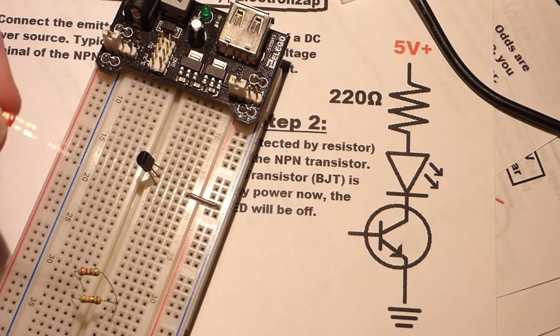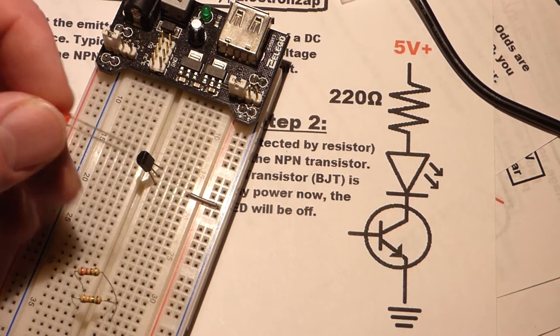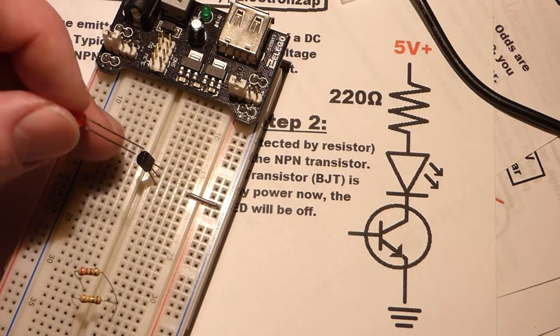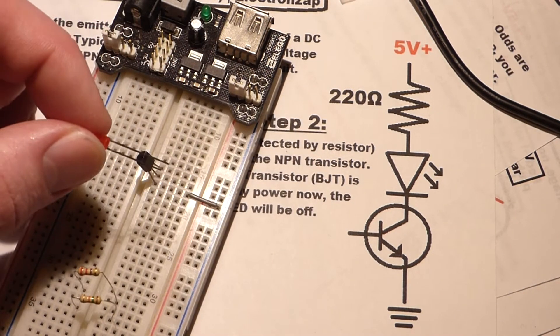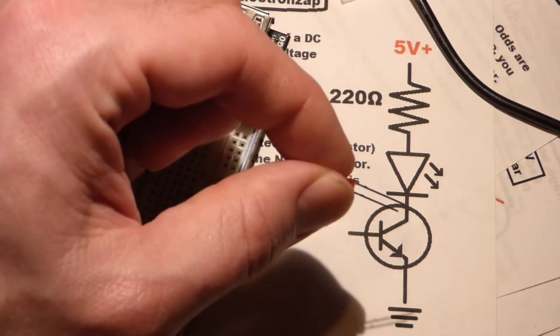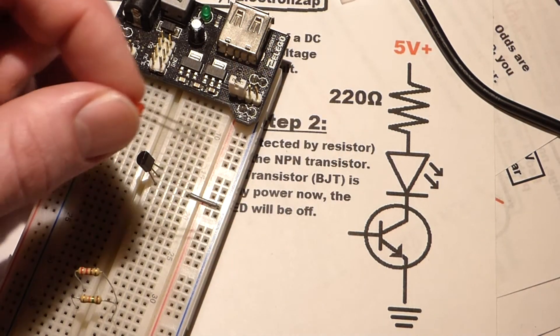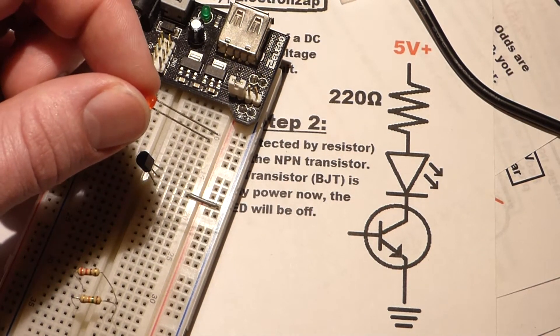Alright. So now moving along, we're going to add our load. So I shifted the board a little bit. The pin layout lines up with the schematic diagram a little bit better. We've got the collector on top, collector on top.